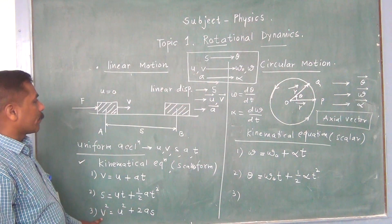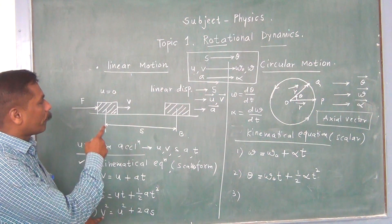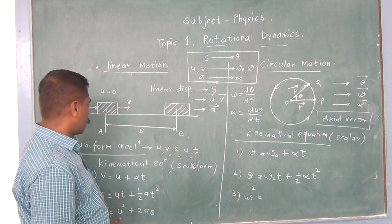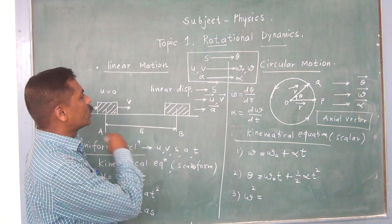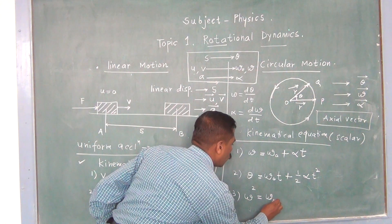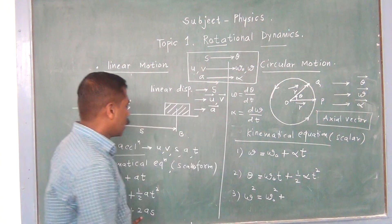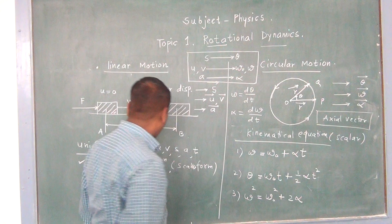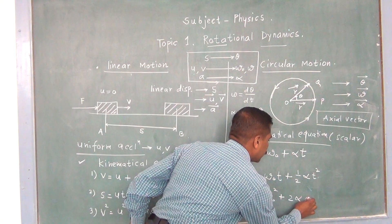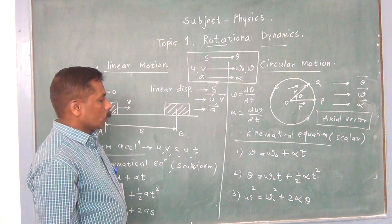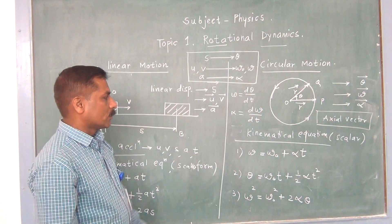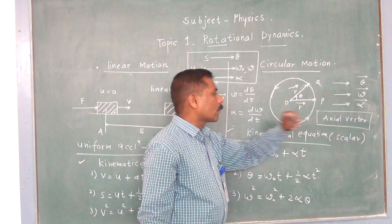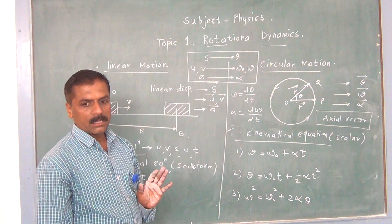How can we form the third kinematical equation? V squared, the final linear velocity, is replaced with omega squared. U, the linear initial velocity, is replaced with omega 0 squared, plus 2 times A — linear acceleration — replaced with alpha, and S, the linear displacement, is replaced with theta. These are the important kinematical equations in scalar form related to circular motion.